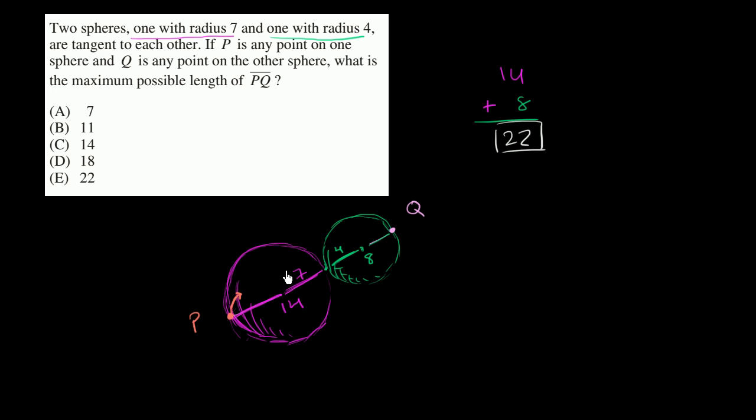Because notice, we can definitely find a distance of 22. This we can definitely find between two points on these two surfaces. And notice that is the largest of all of their possible choices. So we would go with the largest of all of their possible choices.